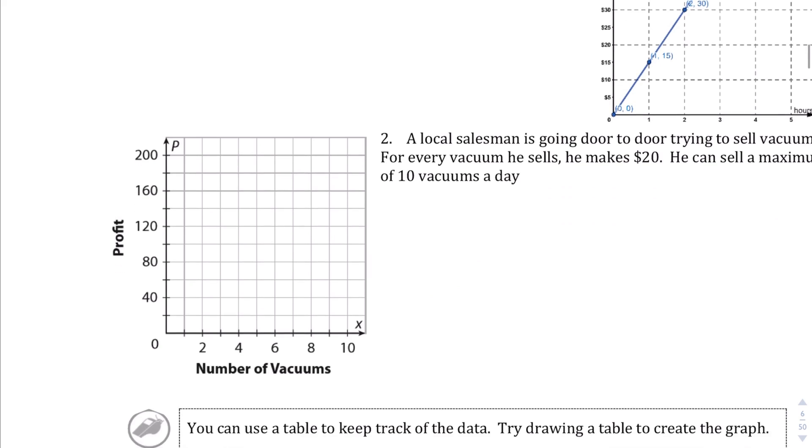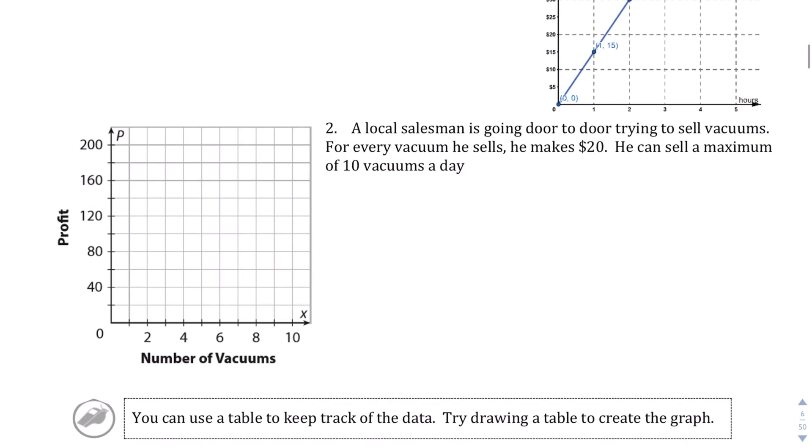So here we go. A local salesman is going door to door trying to sell vacuums. For every vacuum he sells, he makes $20. He can sell a maximum of 10 vacuums a day. So first of all, we have to answer, or we have to be able to tell whether or not this is continuous or discrete. And the answer to this is that it's discrete because you can't sell fractional parts of a vacuum. You can't sell 2.5 vacuums. So we're going to say this is a discrete graph.